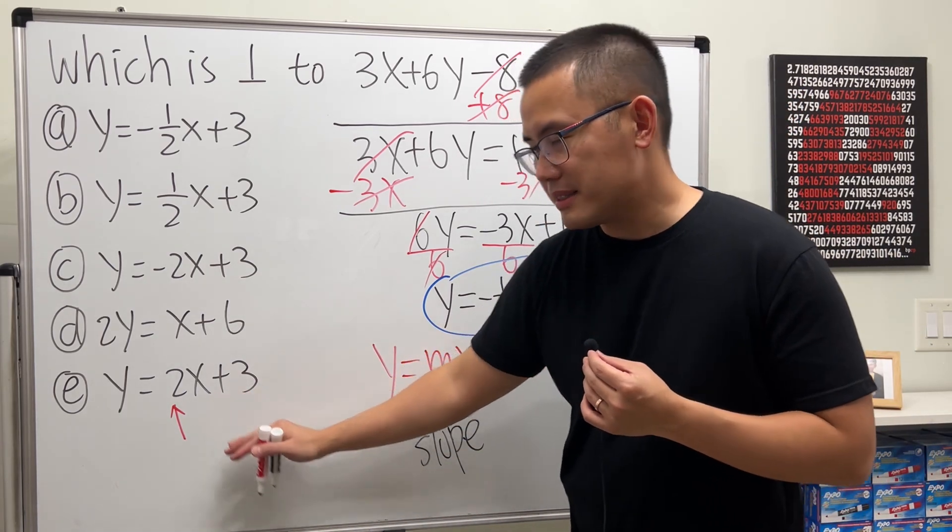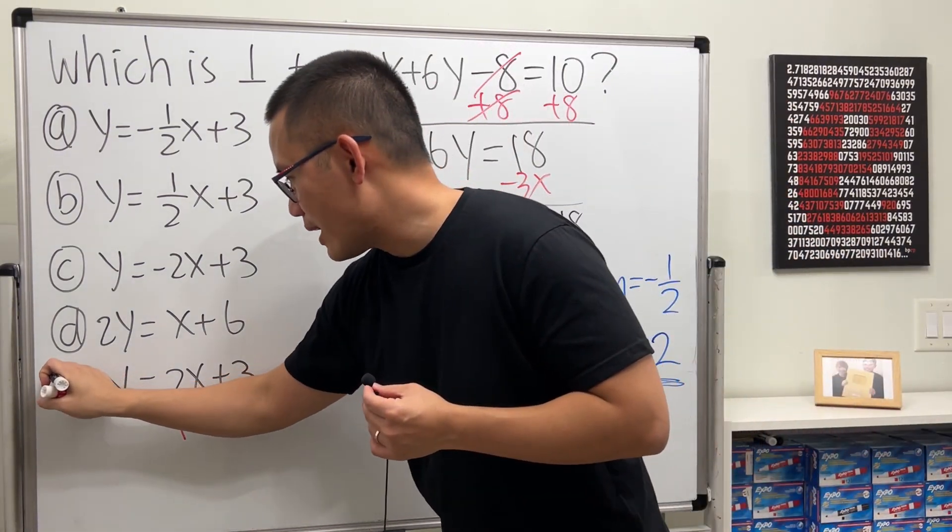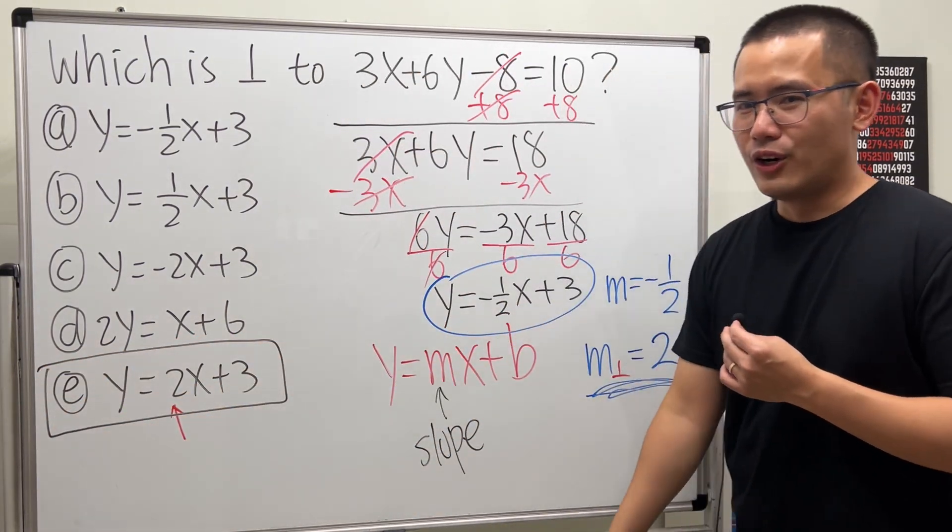So, this line is perpendicular to this line right here. So, that's why the answer is actually E. So, hopefully this right here helps.